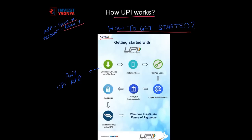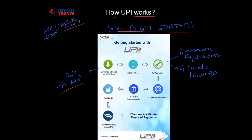First, you need to download any bank's UPI app — irrespective of whether you have an account or not — from the Google Play Store. It is not available on Apple App Store and will take at least six months to list there. Once the app gets installed, it automatically registers your phone by sending an OTP, and the next step is you have to create your password for the app. This password will be required every time you open the app. One important thing to note is that the phone number on which you have installed this app should be the same as the one registered with your personal bank account.